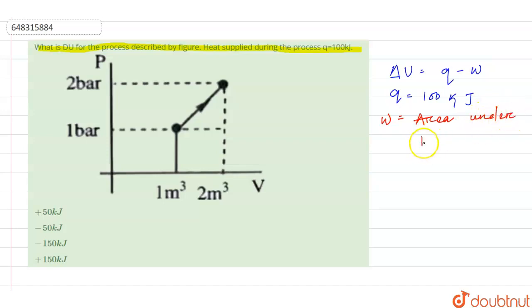Area under the PV curve - what would be the area? The area will be one-half times (1 plus 2) times 1. Hence this is 3/2, that is 1.5 bar meter cubed. Hence this will be W.